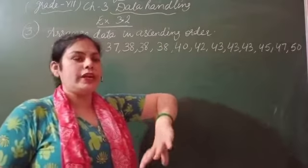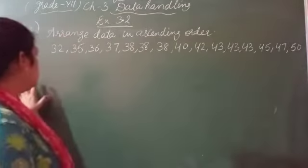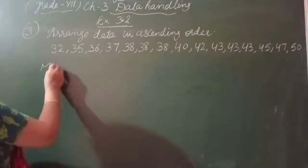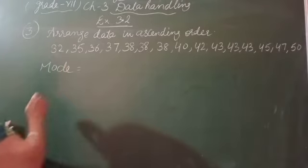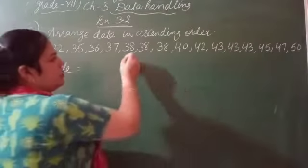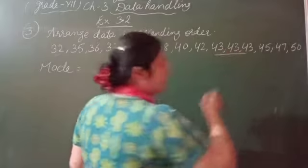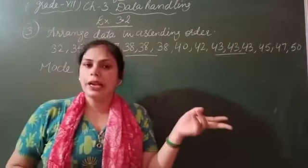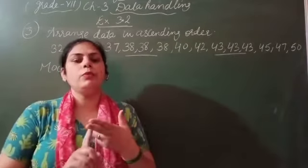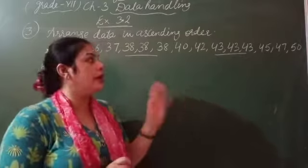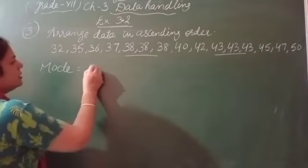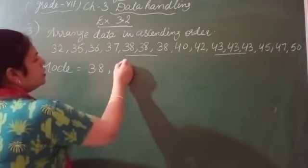First, we have to calculate mode. So what will be the mode here? 38 and 43. Both two values have the same frequency, appearing the same number of times. So your mode is 38 and 43. This is your mode.